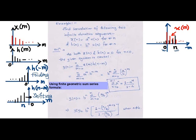Following that, we substitute the values of x(m) and h(n-m), which is to be further simplified using the finite geometric sum series formula.